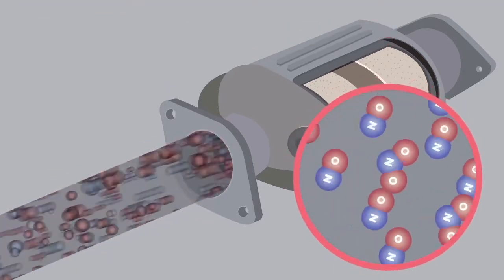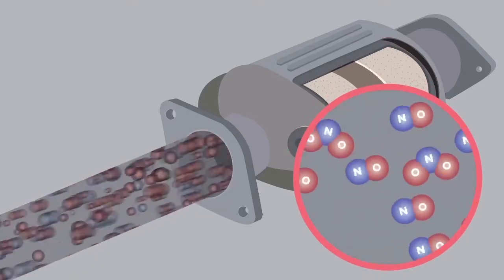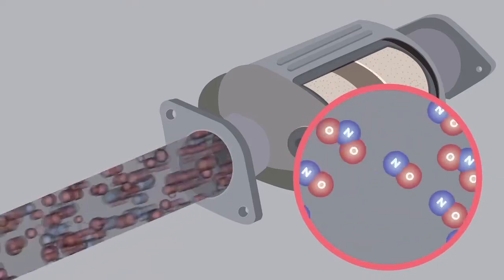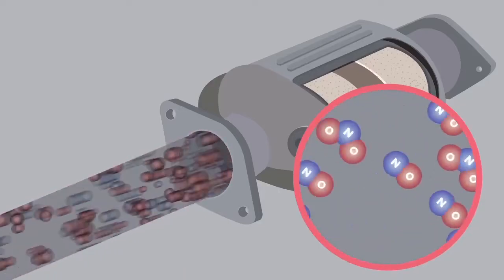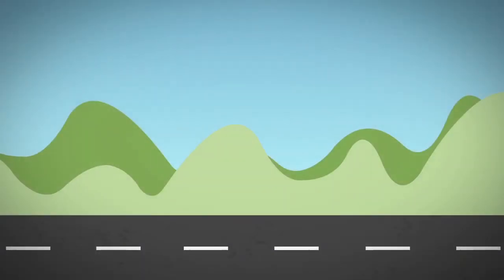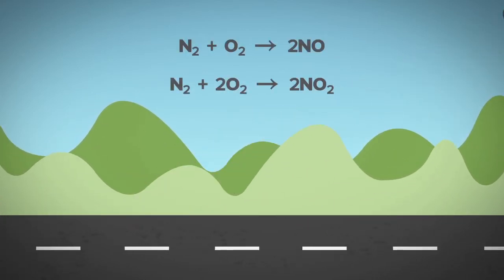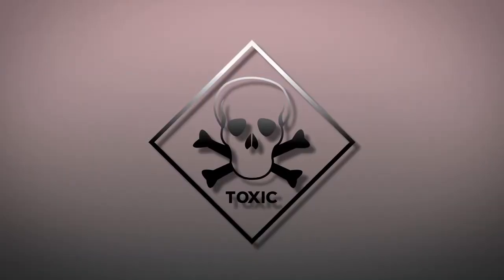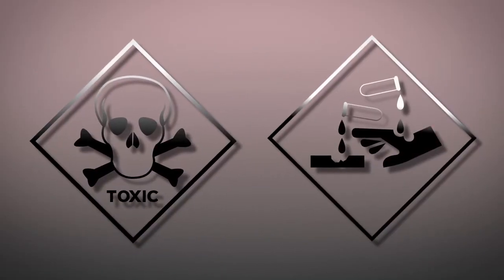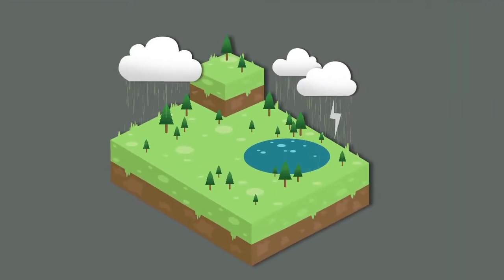The problem is that there is still nitrogen in the air and that can be combined with the oxygen at high temperatures in the engine. This makes really nasty gases like nitrogen oxide and nitrogen dioxide. These are both very toxic and corrosive. They turn into acid rain in the atmosphere and are really bad in general.